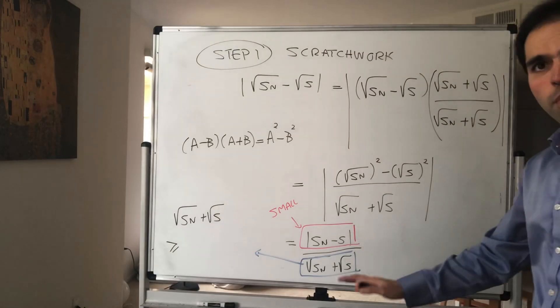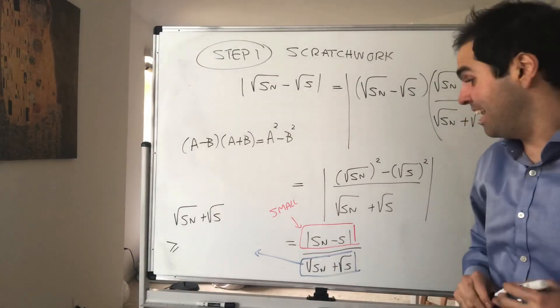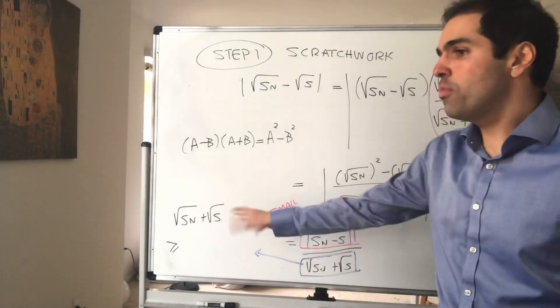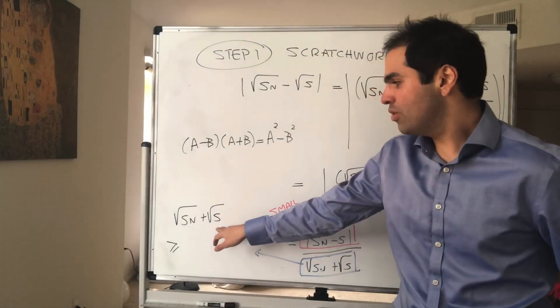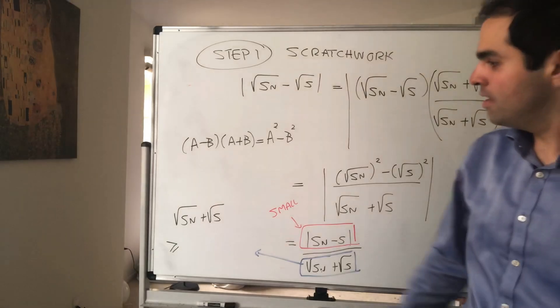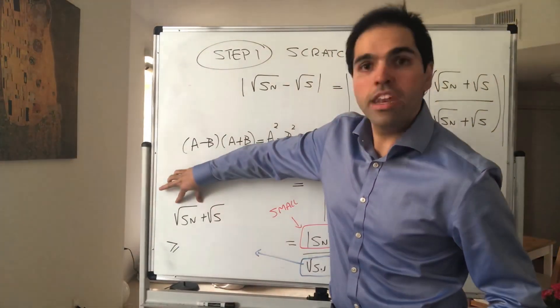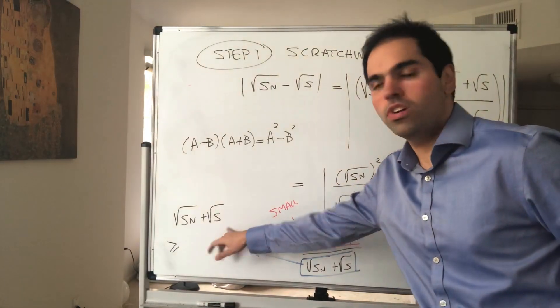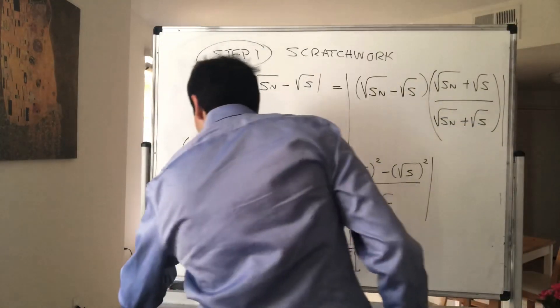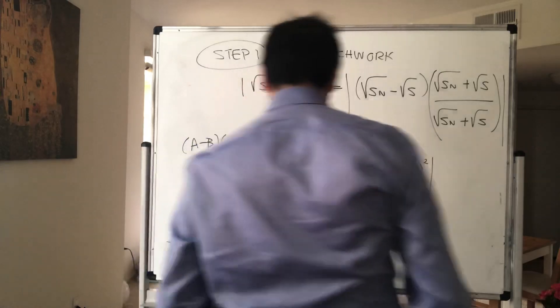Because the problem is this number is kind of wiggly, but we really want this to be greater than a constant. But notice this is non-negative, so in particular square root of Sn plus square root of s is actually greater than or equal to the square root of s.